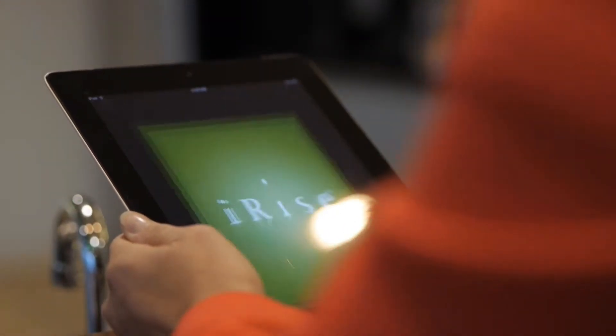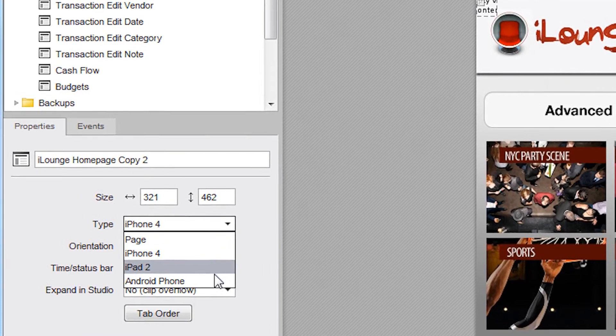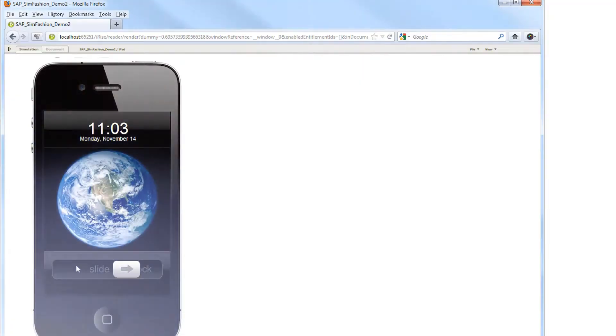One of the most exciting things about iRise in terms of UI design is its mobile capabilities. iRise has built-in Apple and Android emulators, which give you the experience of a mobile device in the browser.